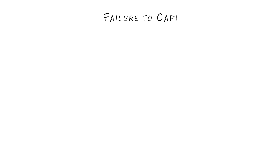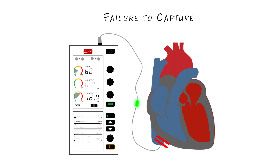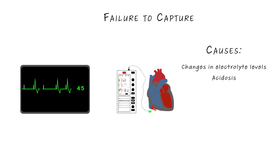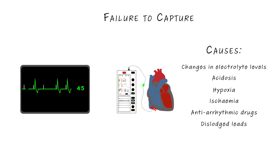Now let's look at failure to capture. The impulse is reaching the myocardium but not producing capture. This can happen for both the atrial and ventricular leads. On the monitor, we will see pacing spikes that aren't followed by a P-wave or QRS complex, and we will see the patient's underlying rhythm. This can happen intermittently, which is called intermittent failure to capture. The mechanism is usually changing thresholds of the myocardium, which can be due to factors like change in electrolyte levels, acidosis, hypoxia, ischemia, and antiarrhythmic drugs.